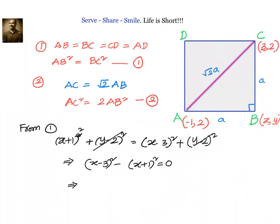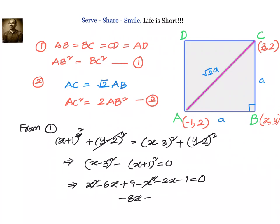We can expand using the difference of squares: (x−3)² − (x+1)² = 0 gives x²−6x+9 − (x²+2x+1) = 0. Canceling x², we get −8x + 8 = 0, so x = 1.